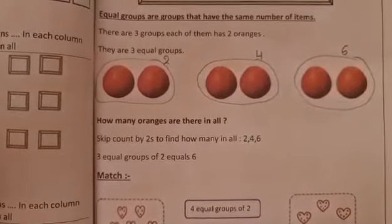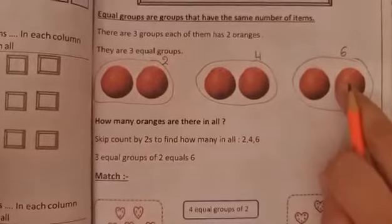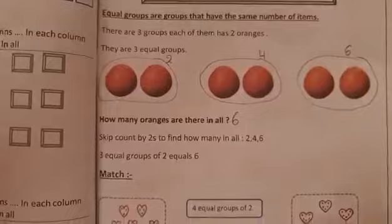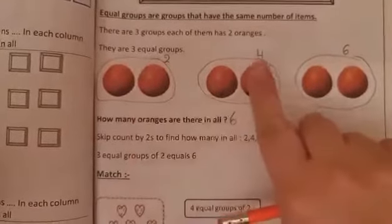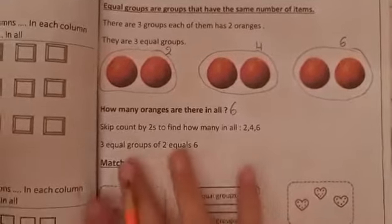So how many oranges are there in all? They are six oranges, so I have first group, second group, and third group.